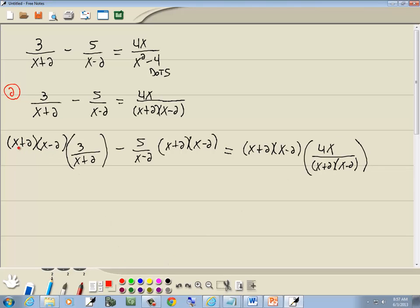Now over here, the x plus 2s are going to cancel. And over here, the x minus 2s will cancel. And over here, the x plus 2s will cancel and the x minus 2s will cancel. So let's write down what we have left before we multiply them together. We've got 3 times x minus 2 minus 5 times x plus 2 equals 4x.